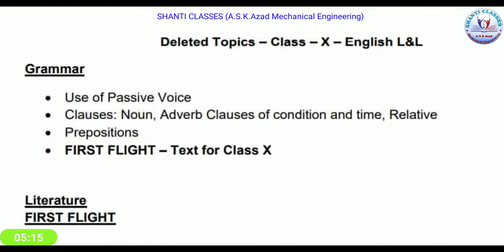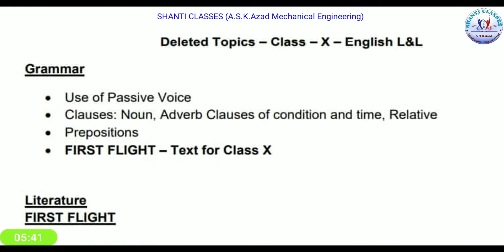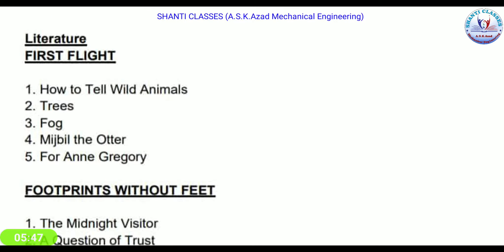Now let's talk about English deleted portions for class 10th. In grammar, passive voice has been changed. Clauses — subordinate clauses including relative clauses, prepositions, and conditional clauses — have been removed. From the First Flight textbook and class 10th coursebook literature, topics such as 'How to Tell Wild Animals,' 'Trees,' 'Fog,' 'The Otter,' and 'Amanda' have been deleted.